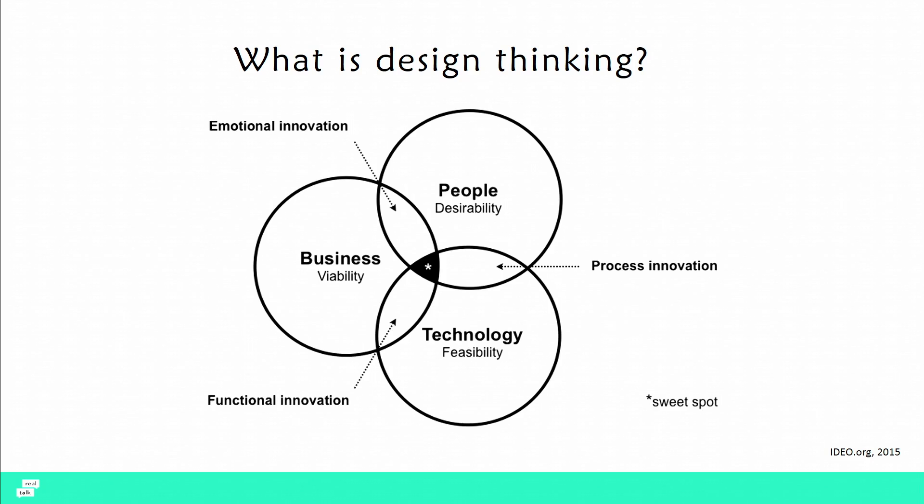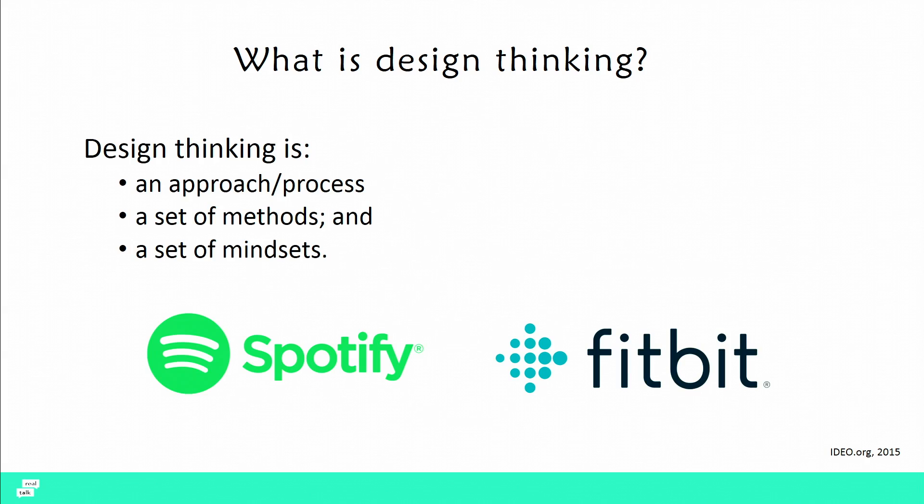This is one of my favorite images. Most of the time we might think about one or even two of these circles, but it's very infrequent that we actually think about all three as we're developing interventions in the public health or medical sphere. We really care about desirability — why would people want to do the thing we're asking them to do? Technologically feasible — figuring out what is already out there that we can make use of. And then just figuring out whether this will actually be successful in the real business world. Design thinking is three things: it's an approach or process, a set of discrete methods and tools, as well as a set of mindsets.